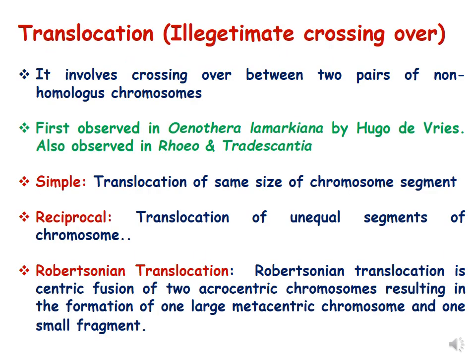As discussed in previous lectures, translocation is also called illegitimate crossing over and it involves crossing over between two pairs of non-homologous chromosomes. Translocation is of three kinds: simple, reciprocal, and Robertsonian. In simple translocation, the same size of chromosome gets translocated; in reciprocal, unequal segments get translocated; and in Robertsonian translocation, it happens between acrocentric chromosomes.